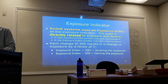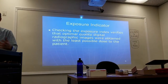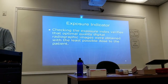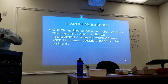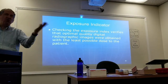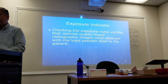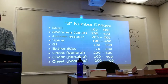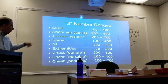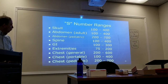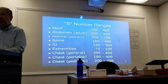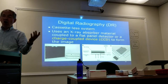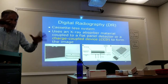Those are the two different types of exposure indicators. Checking them will indicate whether the images were acquired using the least possible dose. We'll talk about dose creep coming up. With DR, it's a cassette-less system using an x-ray absorbing material coupled with a flat panel detector, and more importantly, charge-coupled devices (CCD) that form the image.